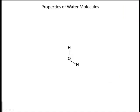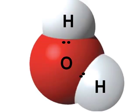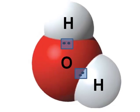A single water molecule is made up of one oxygen and two hydrogens, and they are arranged in the shape of a V, as shown here. The hydrogens are covalently bonded to the oxygen, which means they share a pair of electrons between them.